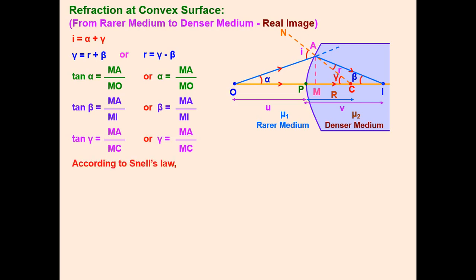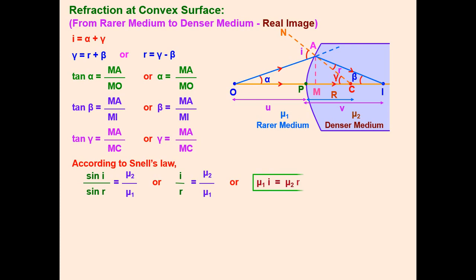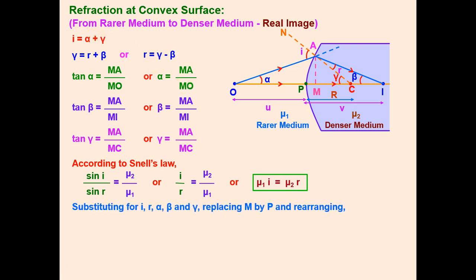Applying Snell's law: mu 1 sin I = mu 2 sin R. Since angles are small, sin I ≈ I and sin R ≈ R, giving mu 1 · I = mu 2 · R. Substituting I = alpha + gamma and R = gamma − beta, then substituting the expressions for alpha, beta, gamma in terms of MA, MO, MI, MC, and rearranging, we obtain: mu 1/PO + mu 2/PI = (mu 2 − mu 1)/PC.